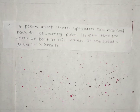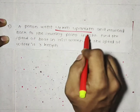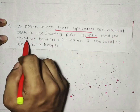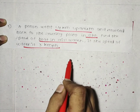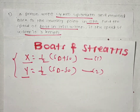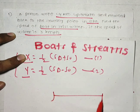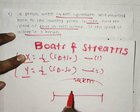Now let's see the next question. A person went 24 km upstream and returned back to the starting point in 6 hours total. Find the speed of the boat in still water — we have to calculate x — if the speed of the water is 3 km per hour, meaning y = 3 km/h. The distance upstream is 24 km, and upstream means x minus y.